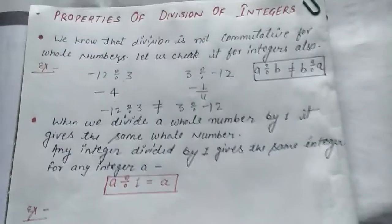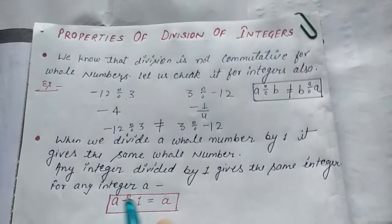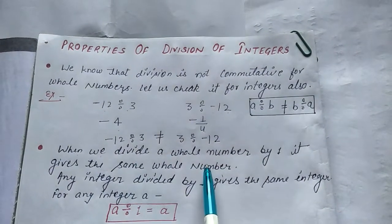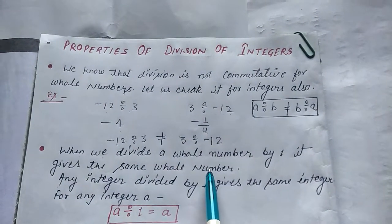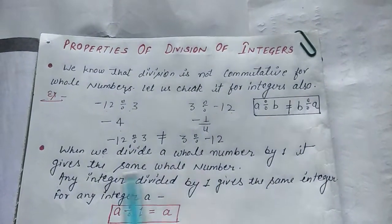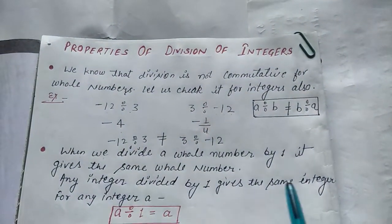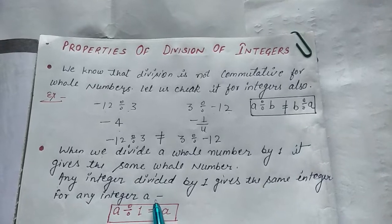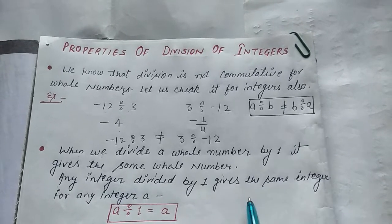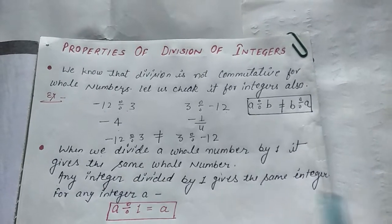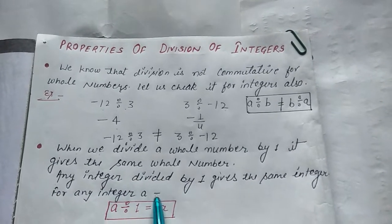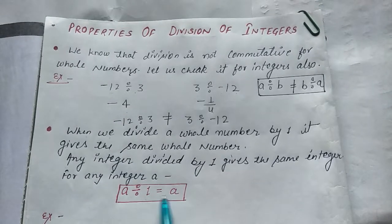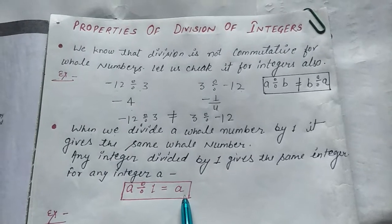Now the second property. When we divide a whole number by 1, it gives the same whole number. Any integer divided by 1 gives the same integer. For any integer a, a divided by 1 equals to a.